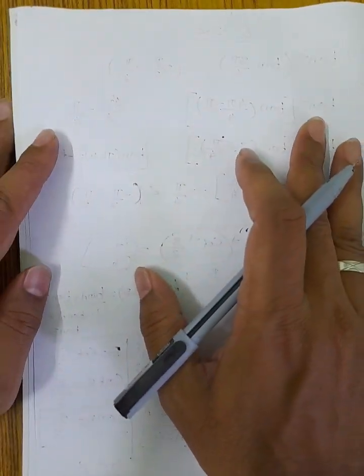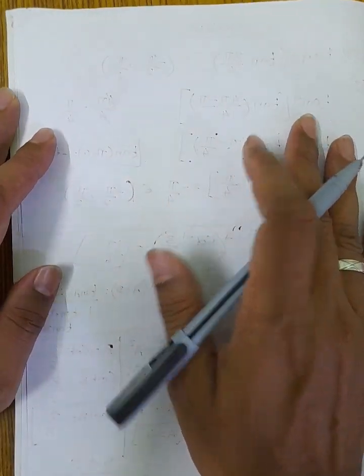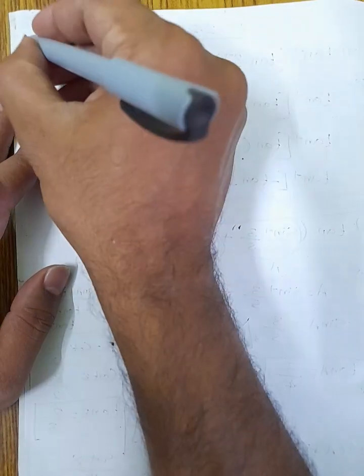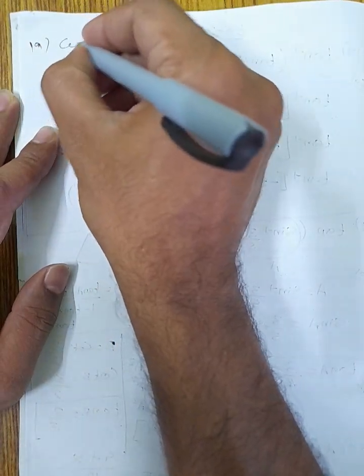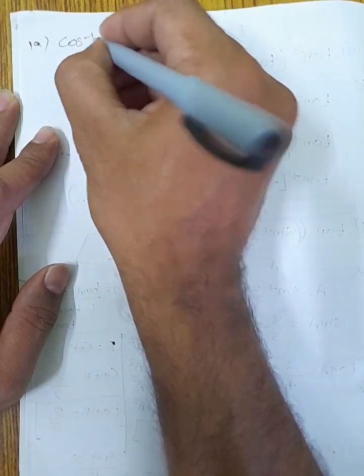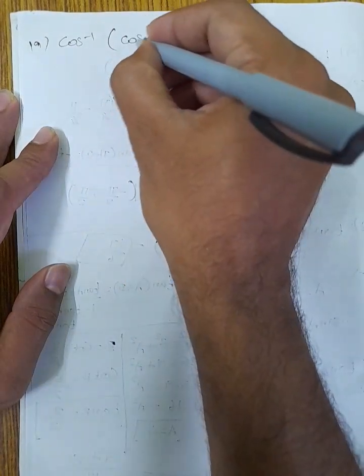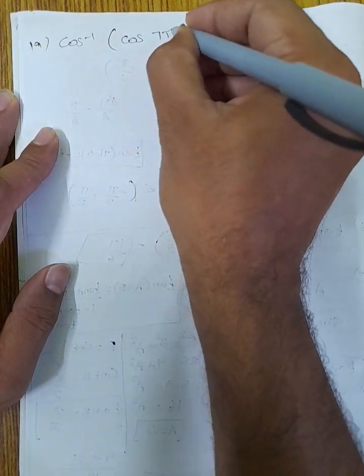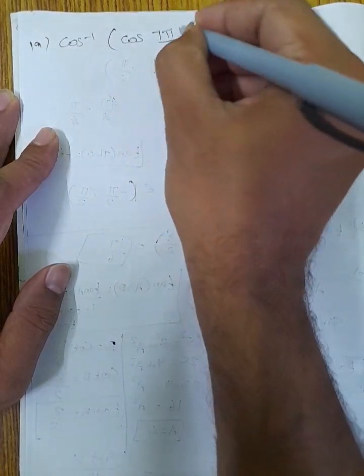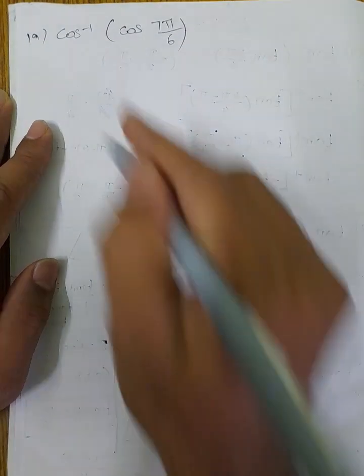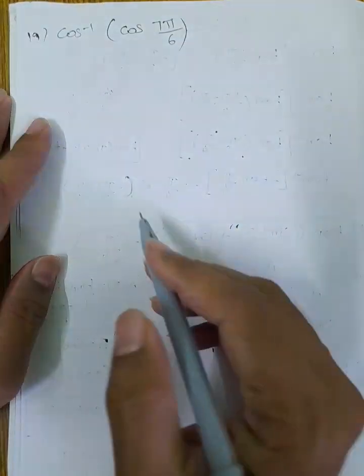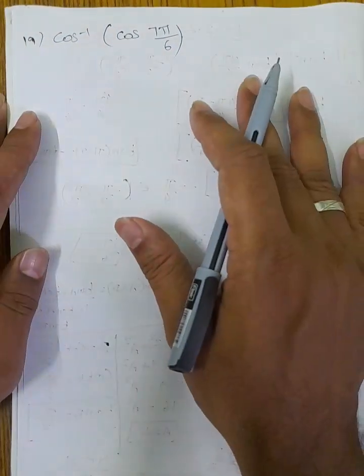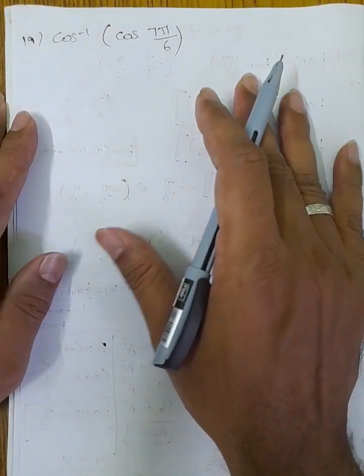Next: 19th question. Find cos inverse of cos(7π/6).